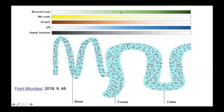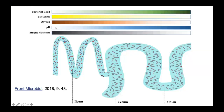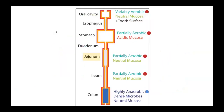Another figure from a recent review paper gives a quick visual comparison of key differences between upper GI compartments and the colon. Starting from the oral cavity down to the colon, one consistent feature of the upper GI is that conditions are either variably aerobic or partially aerobic — meaning many microbes that predominate there are at least tolerant to oxygen and in many cases use oxygen for their respiration. By contrast, the colon is a dramatically different environment that is highly anaerobic, which is one of the key factors driving the stark difference between upper and lower GI.